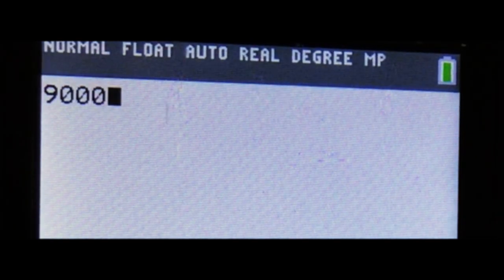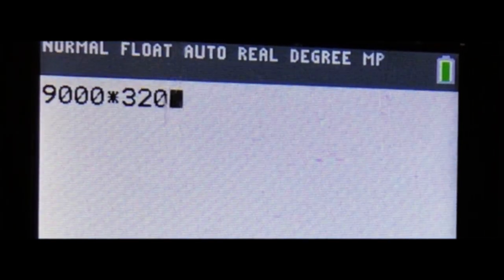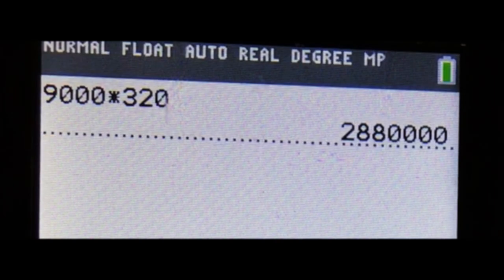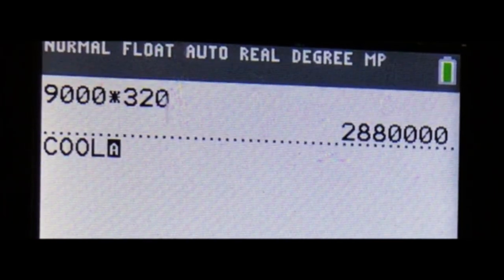Combine all your possible heavy chains with all your possible light chains, and you have over 2.8 million possibilities for your antibodies.